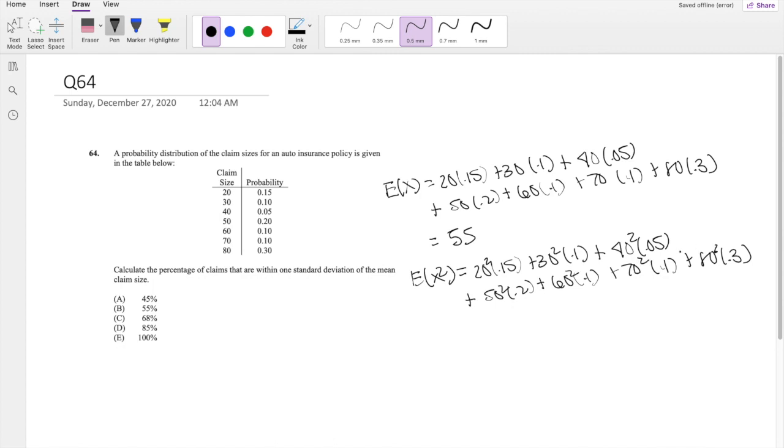And you're maybe asking, why do we need the second moment? Well, that's because the variance formula, our favorite formula, goes like this. It's the second moment minus the first moment squared. And the standard deviation is just the square root of variance.